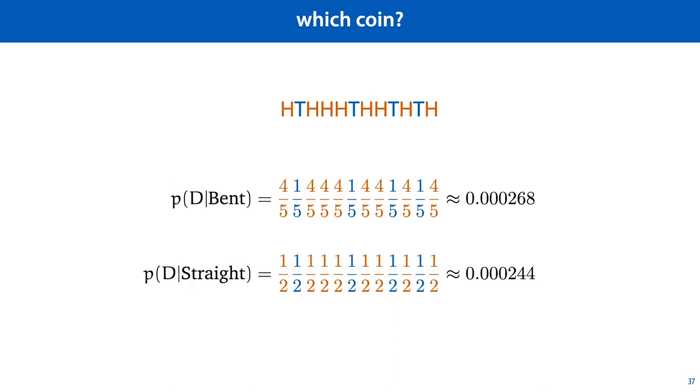Since the coin flips are independent, we simply multiply the probabilities of seeing the outcomes that we did see. As you can see, this gives us two values that are very close together, but for the bent coin, the probability of seeing the data that we did is very slightly higher. So according to the maximum likelihood principle, we choose the bent coin as having generated this data.